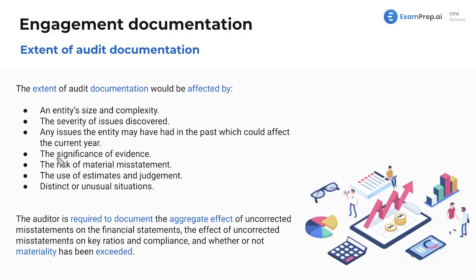The significance of evidence matters — some pieces of evidence are much more important than others. If there's a higher risk of material misstatement, we document that much more thoroughly. The use of estimates and judgment — subjective metrics we are professionally skeptical of — if there are a lot of management estimates, we may want more documentation or bring in another opinion. Finally, distinct or unusual situations, like a recession or massive world event significantly affecting the business, should also be documented.